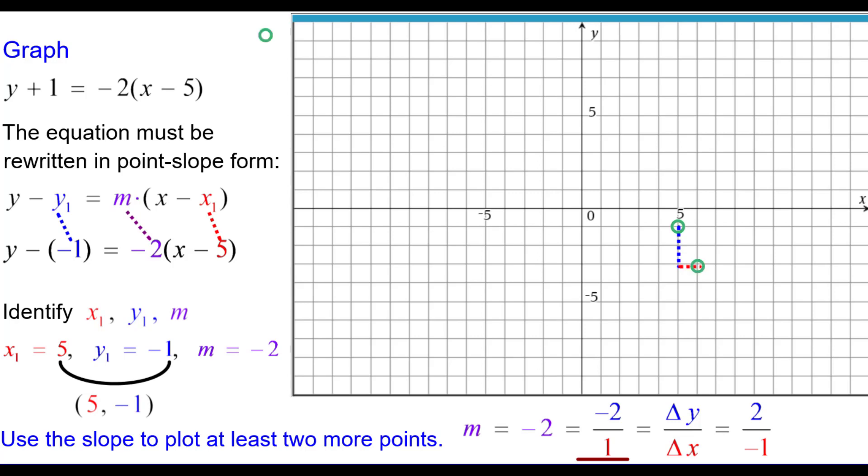We can also think of the slope as positive 2 divided by negative 1 which would be up 2 and then to the left 1. And there's our third point and notice they are all collinear. So we'll draw the line and that is the graph of this equation.